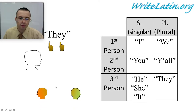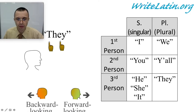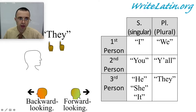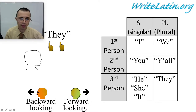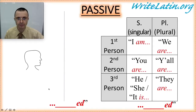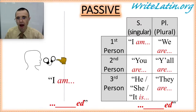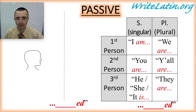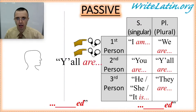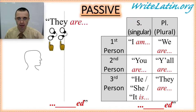The forward-looking head means forward-looking or prospective into the future. The backward-looking head is backward-looking or retrospective into the past. Also, the passive forms we know now: I am blanked, you are blanked, he/she/it is blanked, we are blanked, y'all are blanked, and they are blanked.